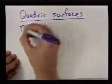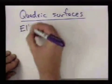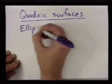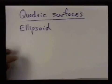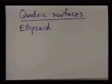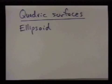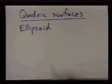One that's similar to the sphere is the ellipsoid. It's sort of an elongated sphere. And if you slice this shape in different directions, you'll always get ellipses.